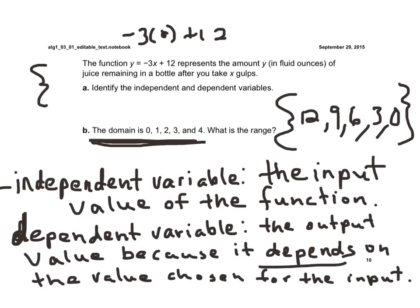And that's my range. So, again, the independent is the number of gulps. And then the dependent would be the ounces remaining.